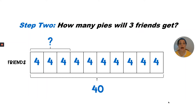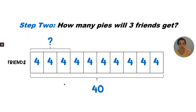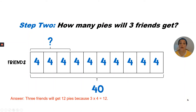Step two: How many pies will three friends get? Now we know that one friend gets four pies. My label at the top is pointing to three boxes — three friends with four pies each is the unknown. We can multiply or skip count by four: three times four — four, eight, twelve. So three friends will get 12 pies because three times four equals twelve.